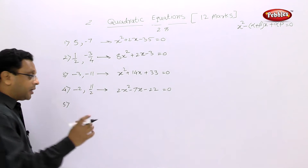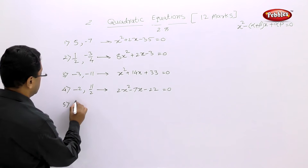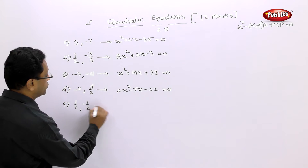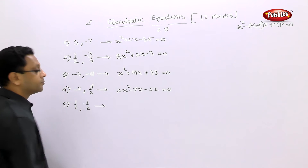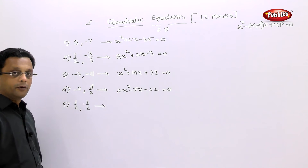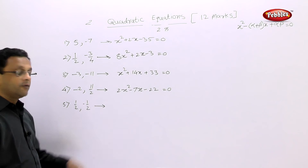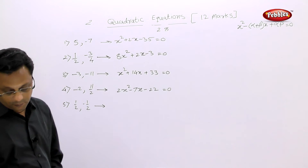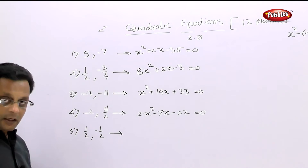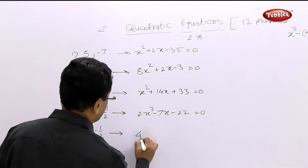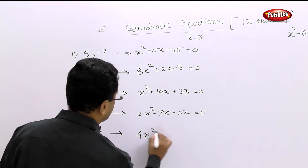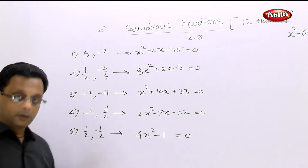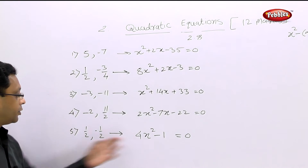Fifth example: roots are 1 by 2 and minus 1 by 2. Pause your video and find the answer. The answer is 4x squared minus 1 equal to 0. This is the quadratic equation when you get these two roots.